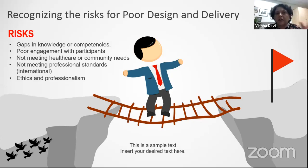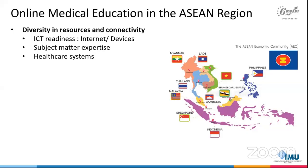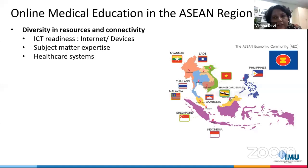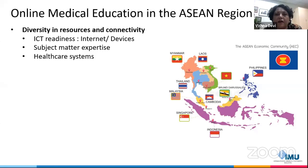I'm going to take you to the ASEAN perspective. Looking at the ASEAN region — Malaysia, Singapore, Indonesia, Thailand, and Indochina including Vietnam, Laos, Cambodia, Myanmar, and Philippines — just like India, where there is big diversity, we also have diversity issues in the ASEAN region. One of the big diversity issues is in resources and connectivity. Comparing Singapore with the rest of the ASEAN countries, there is a big gap in ICT readiness, internet bandwidth, capacity, and devices. Singapore's solution may not be suitable for the rest of ASEAN.